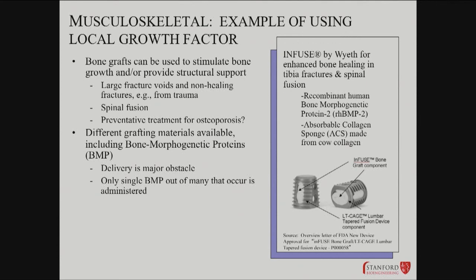There are people using growth factors to design interventions. If you know a protein is involved, maybe you can deliver it. People are working on ways of delivering bone morphogenetic proteins to increase bone strength. One interesting device made by Wyeth uses an absorbable collagen sponge derived from cow collagen loaded with recombinant human BMP2. This has been explored for use in large fracture voids where the two pieces of bone can't be joined smoothly, and possibly as a preventative treatment for osteoporosis. This is a nice device-molecular combination type approach.